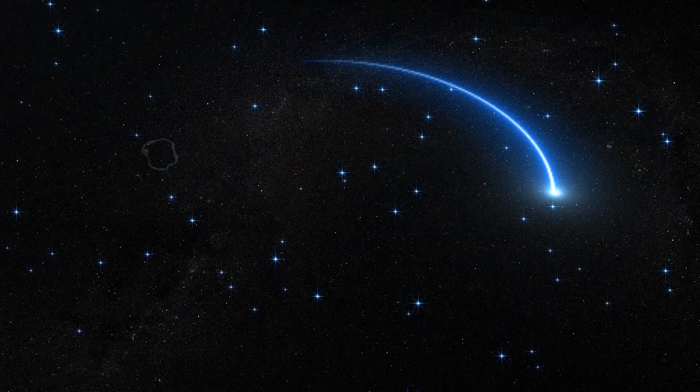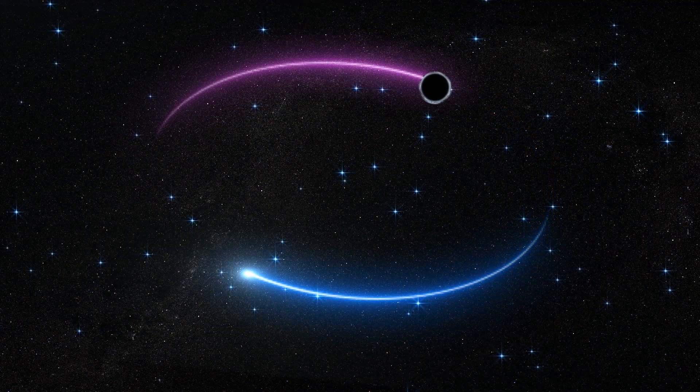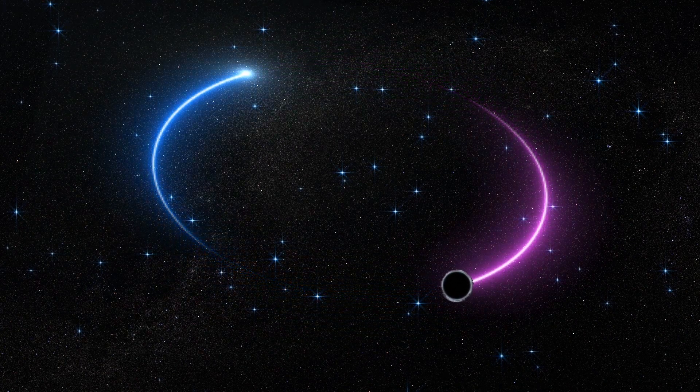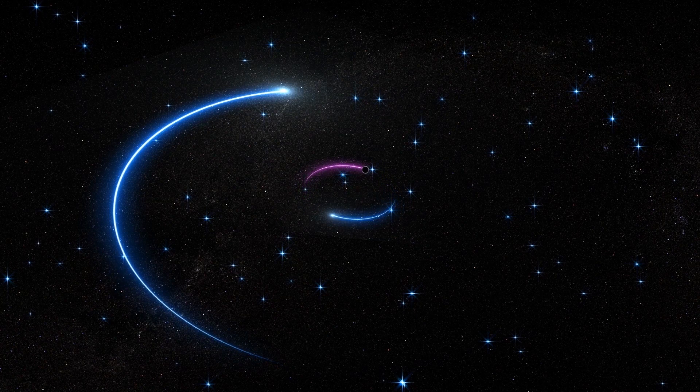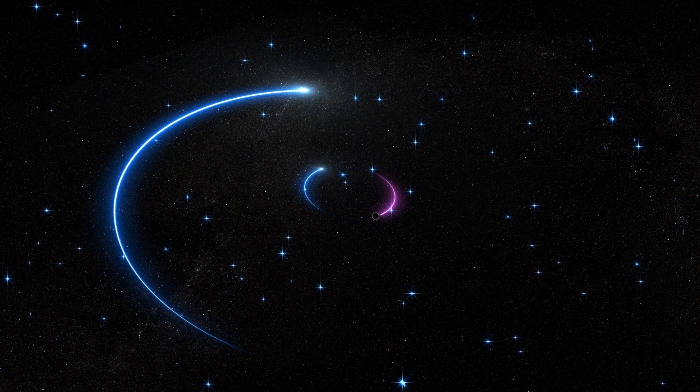However, the black hole of HR6819 exists peacefully with its stellar companions, and astronomers use the orbits of the two stars to infer that an object with four times the solar mass is in the system, which can only be a black hole.